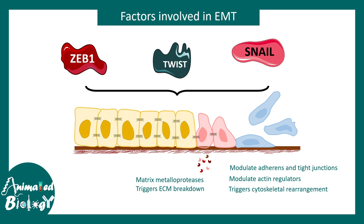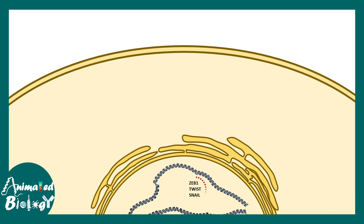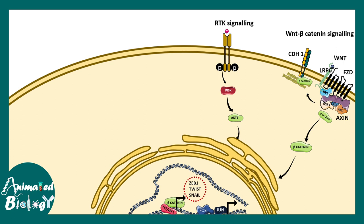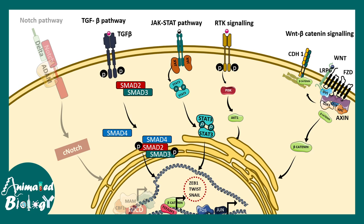There are specific signaling pathways that drive EMT processes, including Wnt/beta-catenin signaling, receptor tyrosine kinase and PI3K/AKT pathways, JAK/STAT pathways, and TGF-beta and Notch/Delta signaling. TGF-beta and Notch/Delta signaling triggers production of ZEB1, Twist, and Snail — the key factors for the EMT program. A complex interplay of these signaling pathways determines when and how EMT occurs.